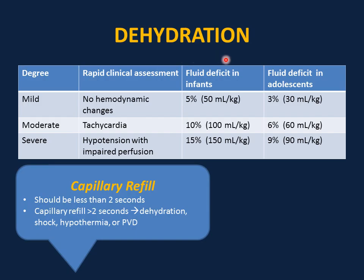For rapid assessment: mild dehydration means the child is hemodynamically stable with no vital sign changes — this is 5% dehydration with a fluid deficit of 50 ml per kg (3% or 30 ml/kg in adolescents). Moderate dehydration presents with tachycardia — 10% dehydration, replace 100 ml per kg (6% or 60 ml/kg in adolescents). Severe dehydration shows hypotension with impaired perfusion — 15% dehydration, replace 150 ml per kg (9% or 90 ml/kg in adolescents).